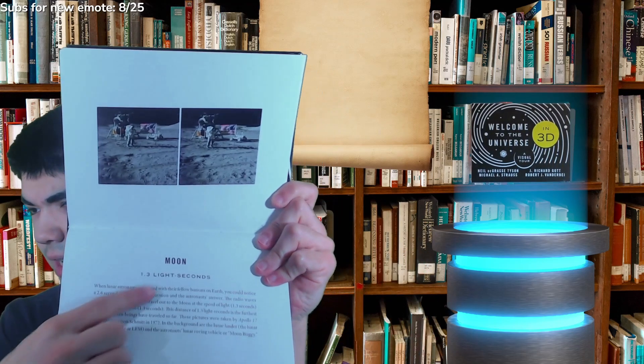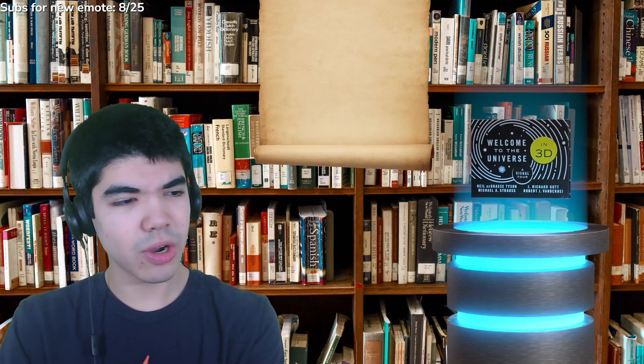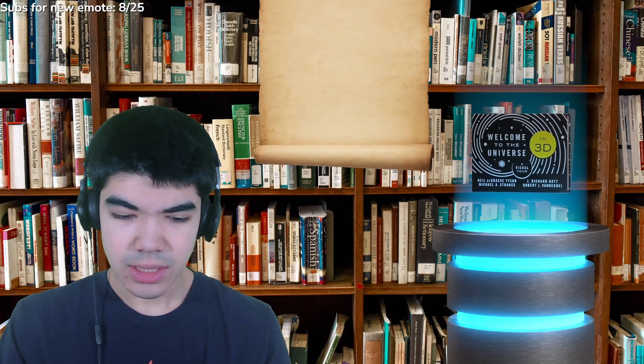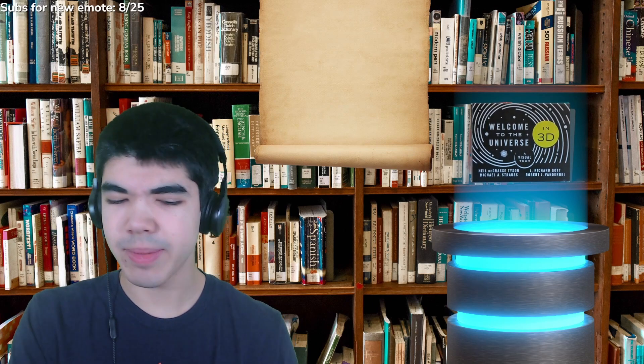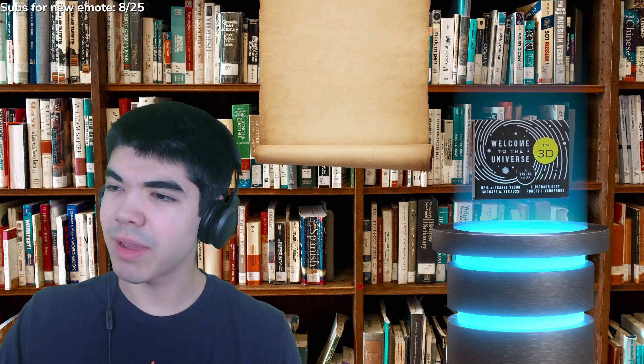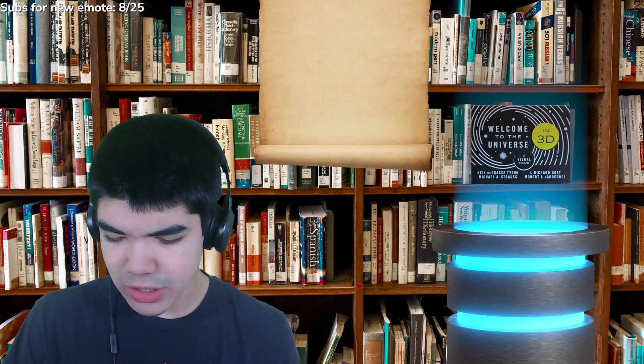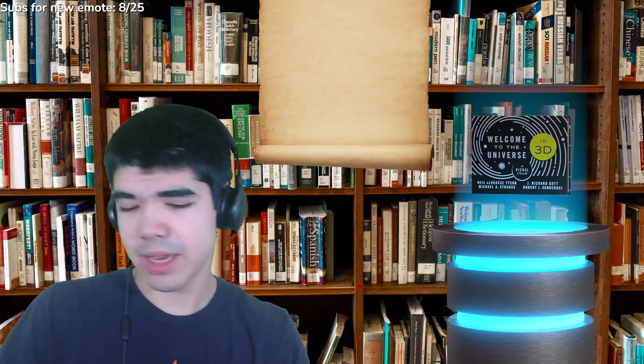But you can see here, Moon, 1.3 light seconds. So, it works its way out into the universe by distance. It goes to the Moon, and then it talks about, well, roughly by distance. Then they talk about the Sun, then they talk about all the different planets working its way further and further out. And then it talks about stars and different galaxies further and further away, eventually ending with the cosmic microwave background. So, very interesting how they do that.